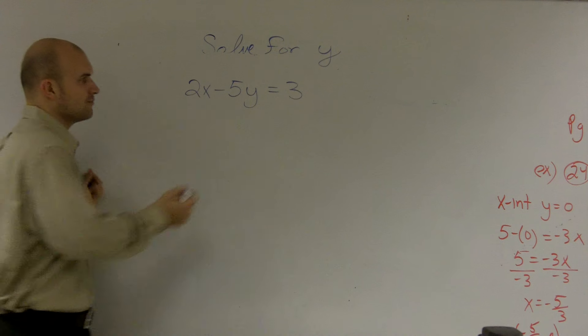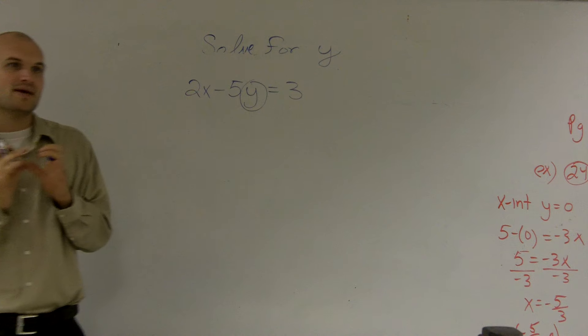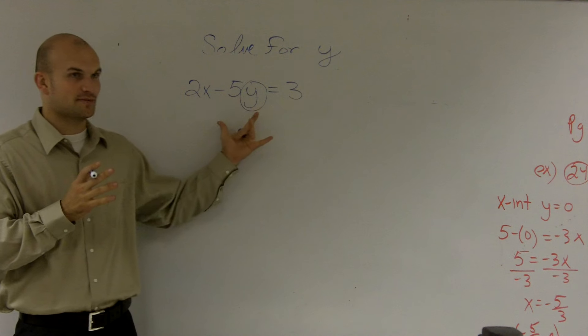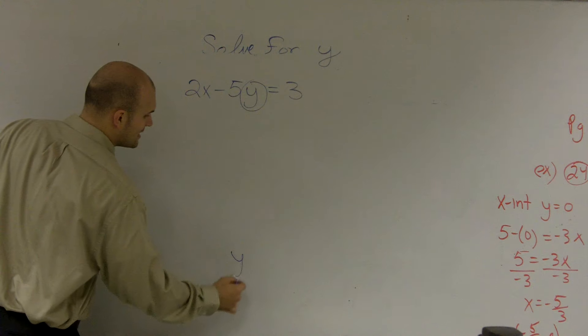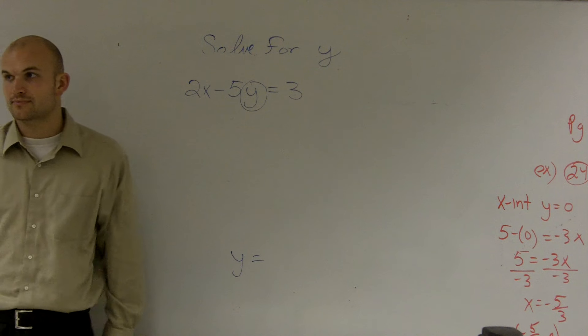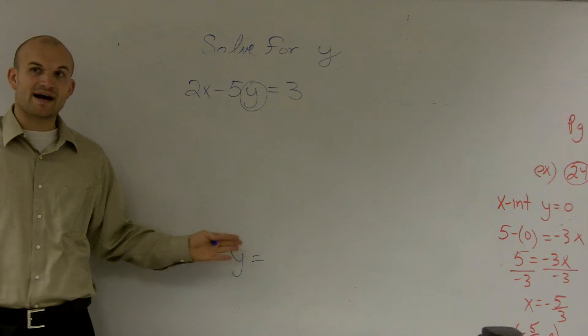So remember, solve for y. One way I can do this is I can circle my variable. What that means is I'm going to pin down my variable, Jonathan, right there to the board. I'm not going to move this variable. But my goal is to get y equal to something. OK? When you say solve for y, that means I want y all by itself.